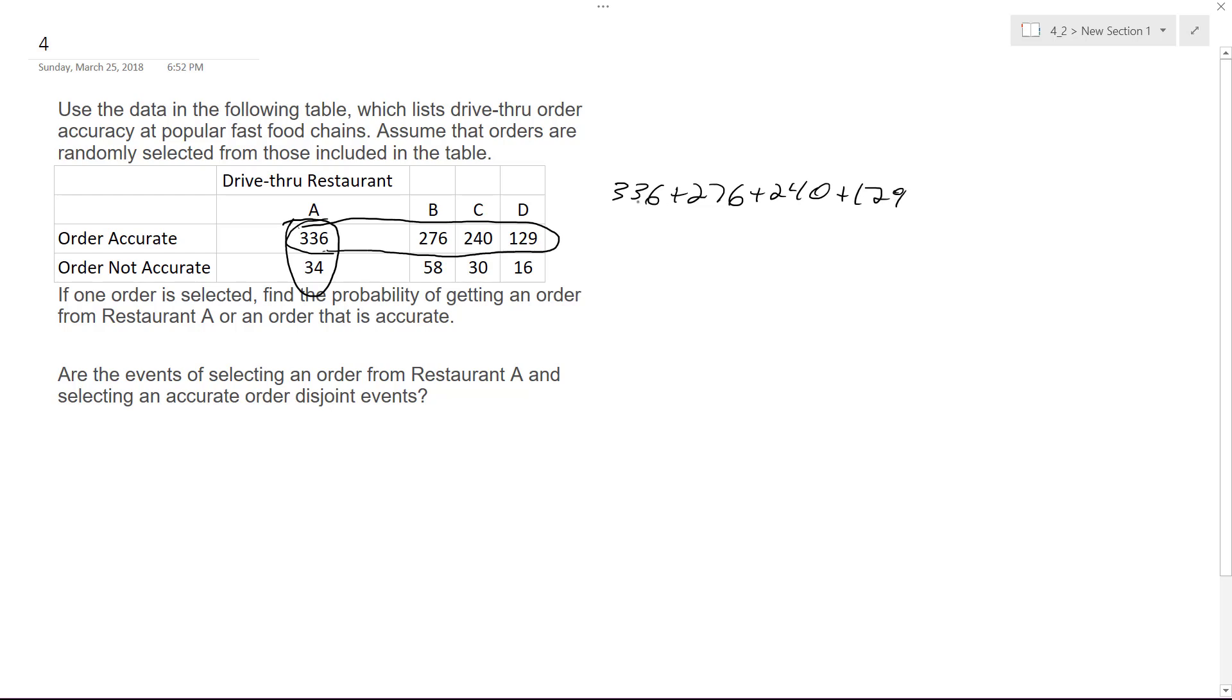Now, you can almost think of this as a percentage of getting an accurate order. But because it's an order from restaurant A, we include the 34, which is the inaccurate ones.